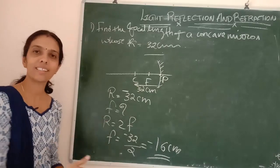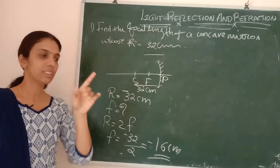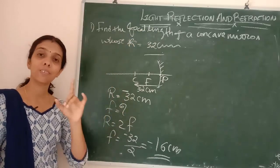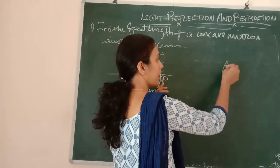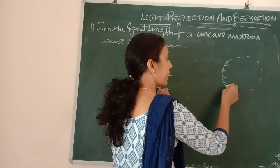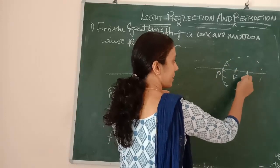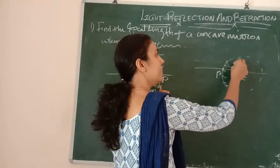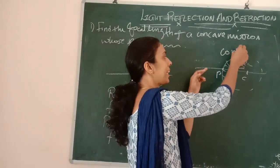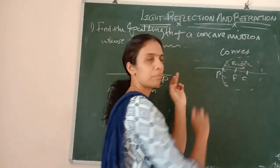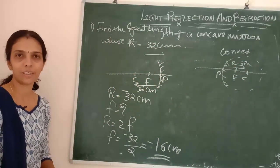Note the sign difference: for a concave mirror R = −32 cm, giving F = −16 cm. If the same question were for a convex mirror, the center of curvature would be on the right side, so R = +32 cm and F = +16 cm. That is the key distinction between concave and convex mirrors in sign convention.